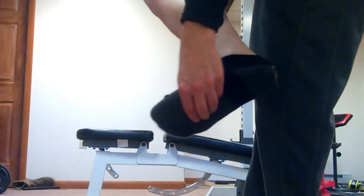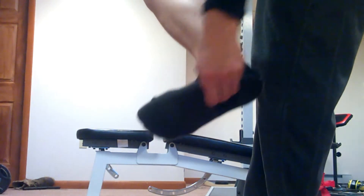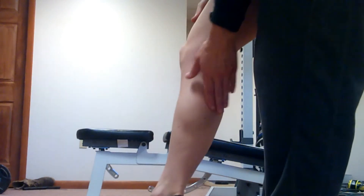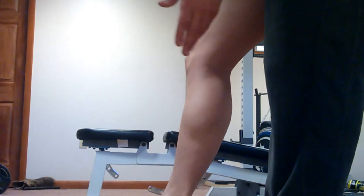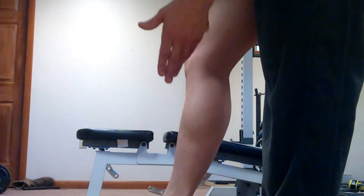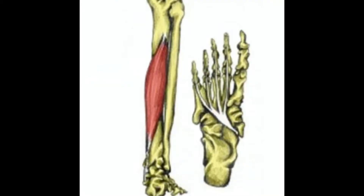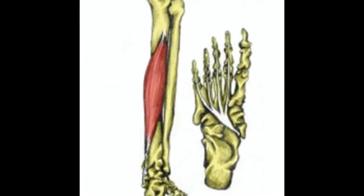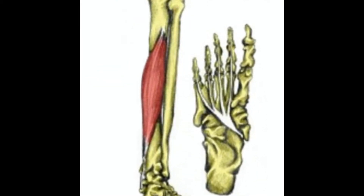Now that you know exactly what I'm talking about on a body, I'm going to go ahead and show you an illustration so you know what this muscle looks like. Now that you know where the starting point and ending point is for the flexor digitorum longus muscle, I can move on to the functions of this muscle.